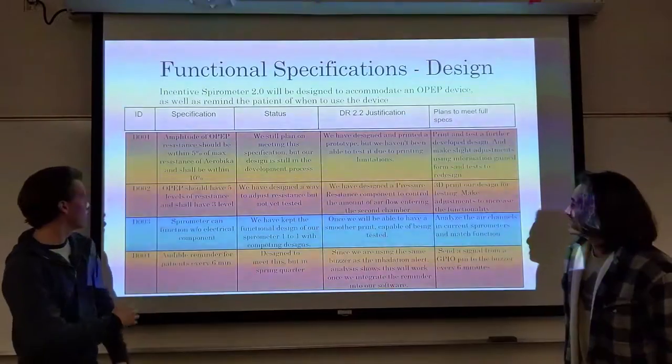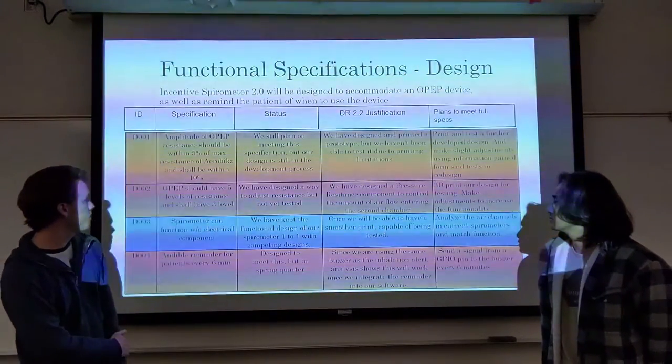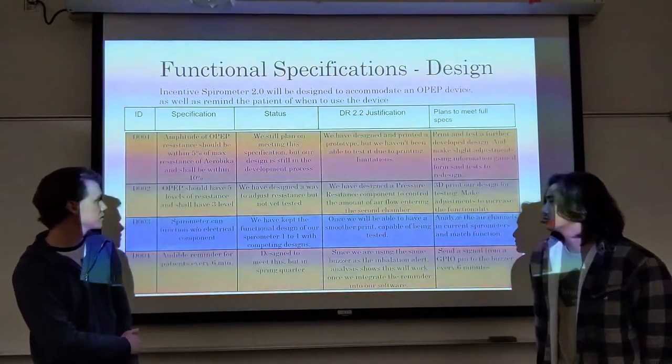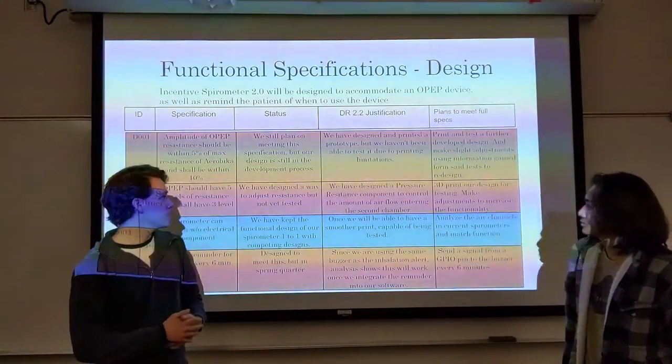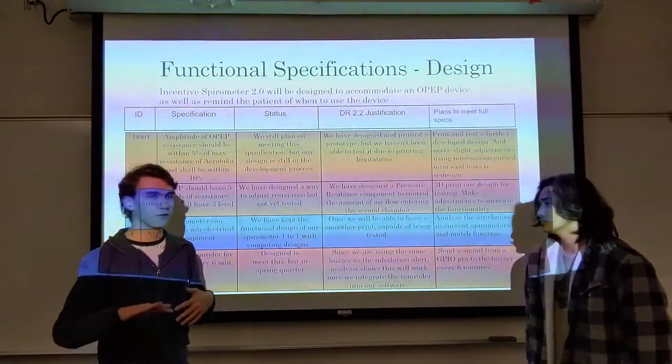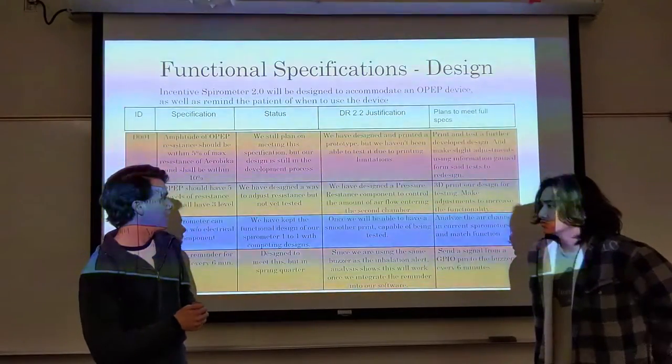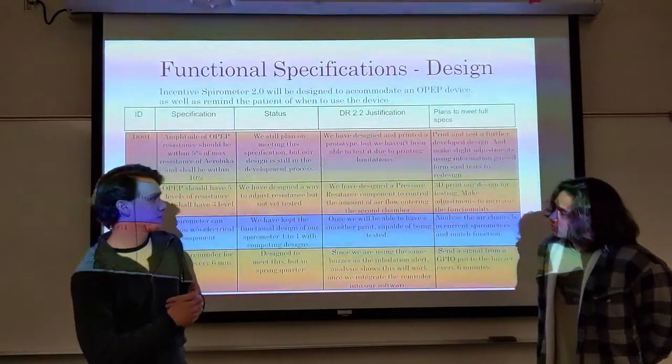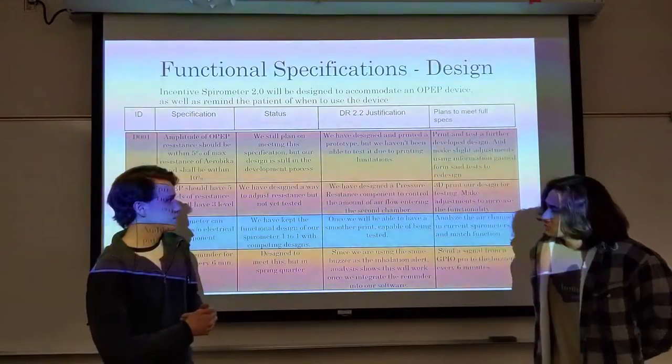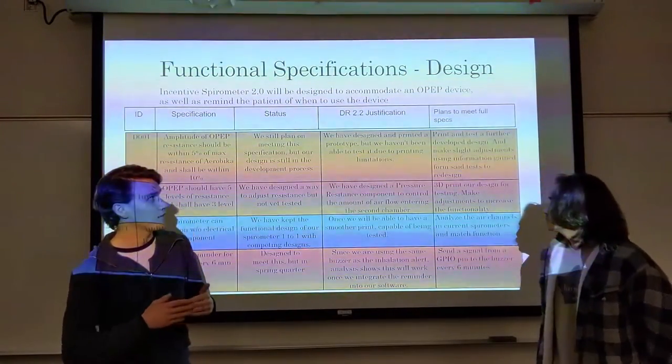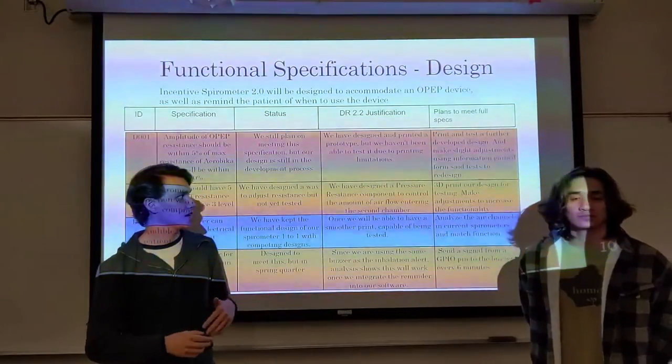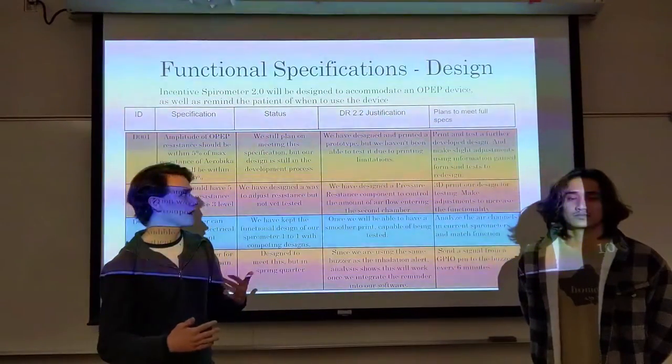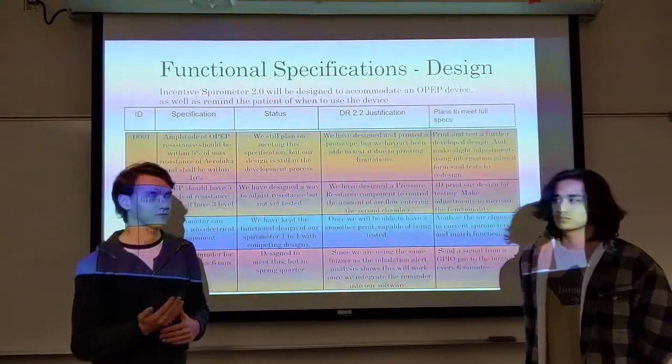Our plans to meet the spec are to print and test further our OPEP design once we get the SLA. The second specification is that OPEP should have five levels of resistance and shall have three levels of resistance. We have designed a resistance chamber or component, but we have not been able to test it yet, as previously mentioned. Our plans to meet the spec are to have the 3D print of our design done and then test it similar to how we tested the previous spec.